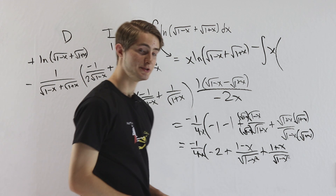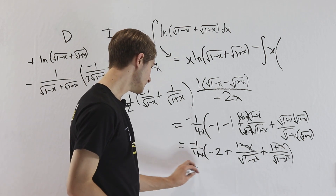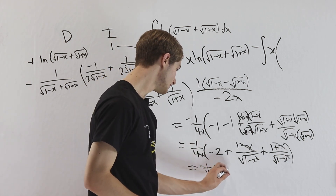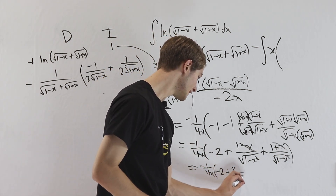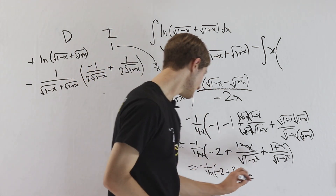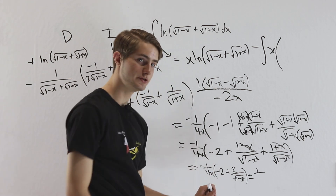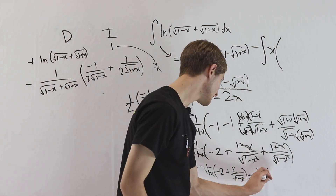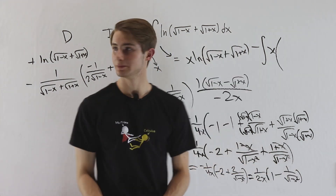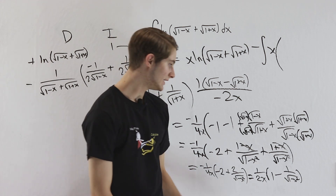These two terms share the same denominator. Looking at their numerators, the x terms cancel out. So we're left with negative 1 over 4x times the quantity negative 2 plus 2 over the square root of 1 minus x squared. Distributing the negative gives 1 over 2x times the quantity 1 minus 1 over the square root of 1 minus x squared. We have successfully simplified this large expression down into this clean form.